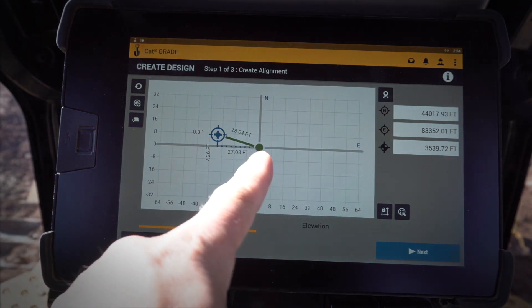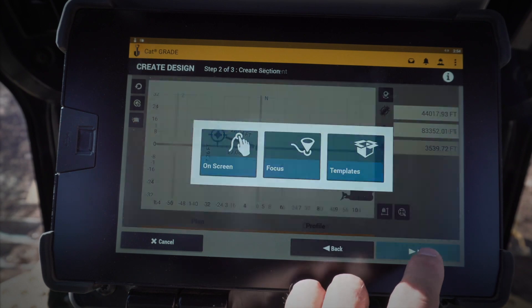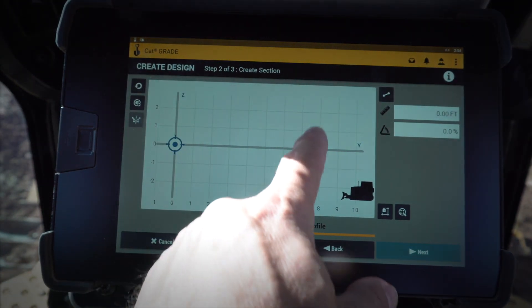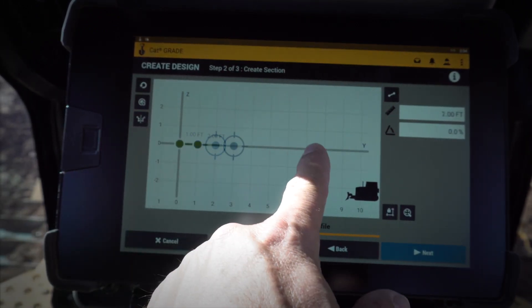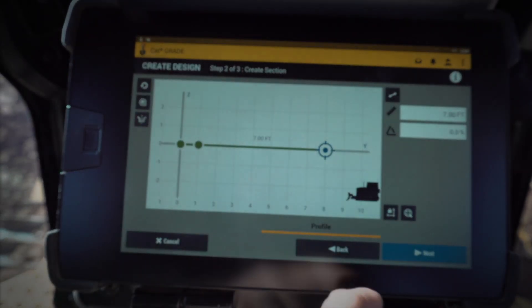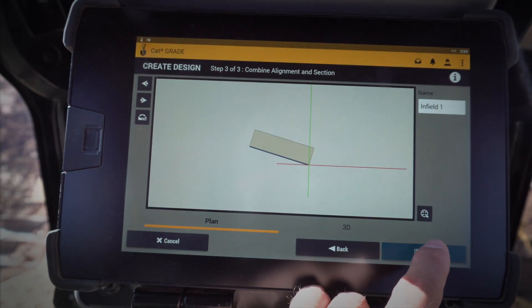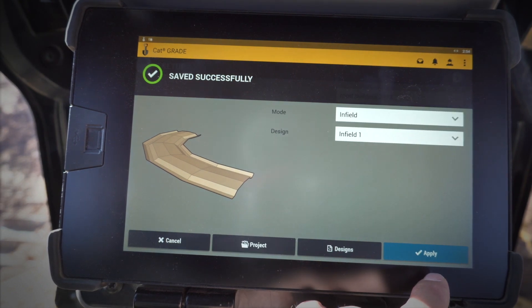So that not only sets where my alignment is, but it also sets my main fall. Now I'm going to go into Next and I'm going to create an on-screen profile. So I'm going to create a couple of points. I can set where I want my other profile to be. Boom, I've got my profile set. I want a flat plane both ways. I'm going to name that Infield Design One.